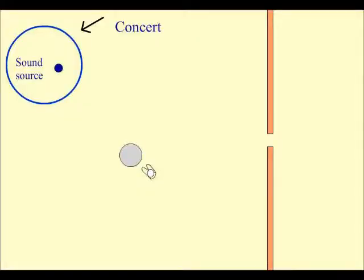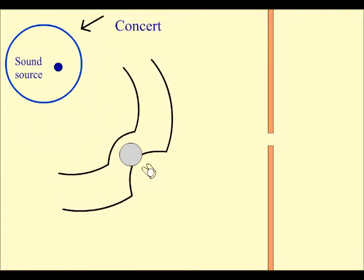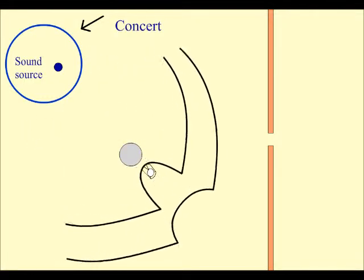Suppose you bought a concert ticket without looking at the seating chart and end up sitting behind a large post, you would still be able to hear the concert quite well. This is because the wavelengths of sound are long enough to bend around the post.